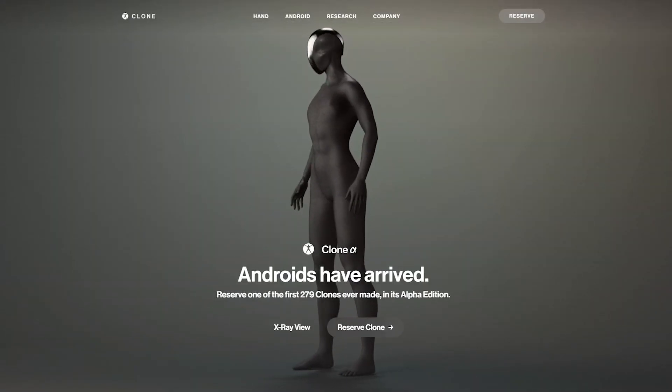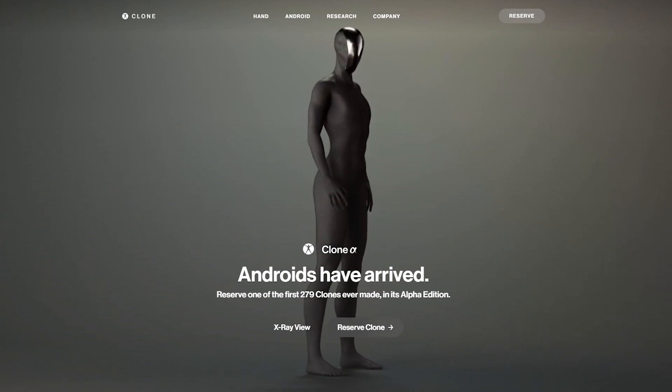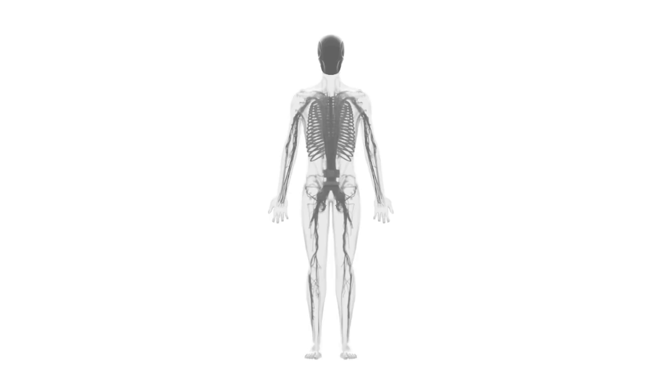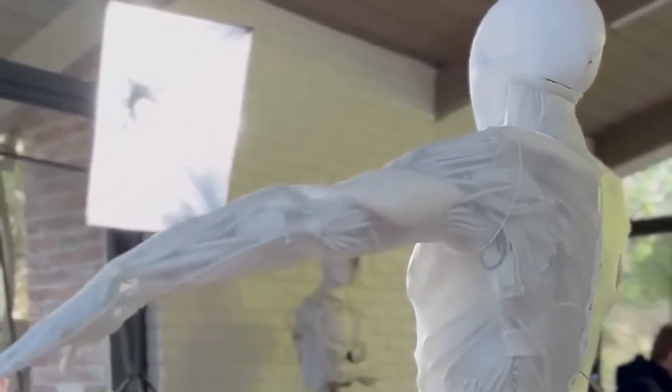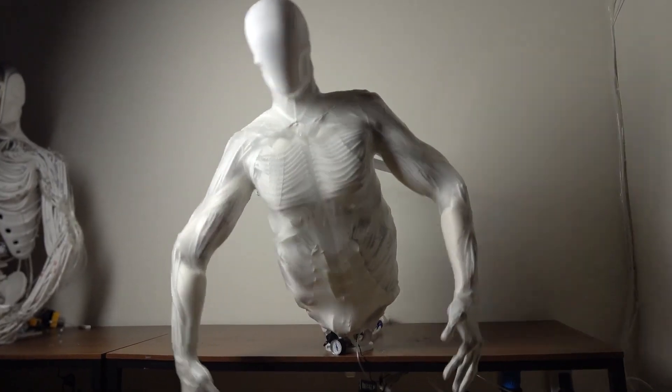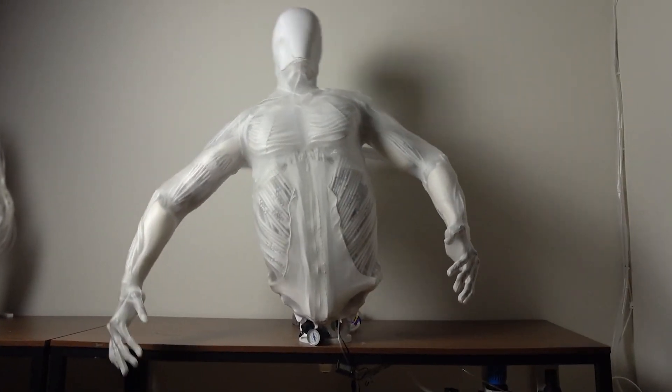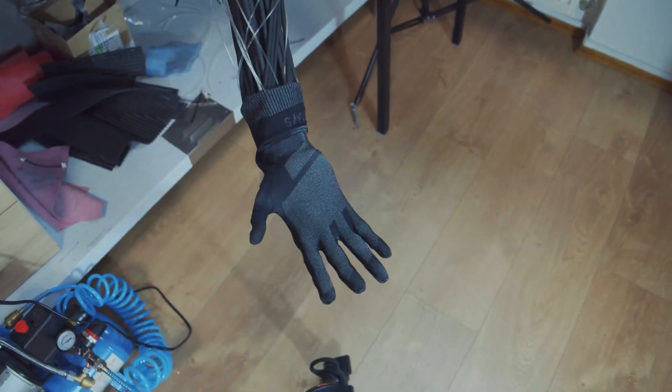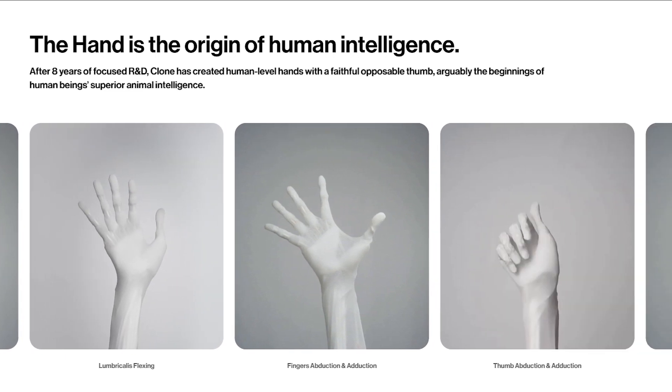The Protoclone robot is expected to be priced like an affordable car, though Clone Robotics hasn't given an exact figure just yet. From what they've hinted at, it could be accessible to regular consumers, especially those interested in bringing robotics into their homes. If it's priced like a car, that means it could be within the range of $20,000 to $40,000, possibly even higher. The robot is designed to perform a variety of household tasks, including washing dishes, folding laundry, and preparing simple meals.